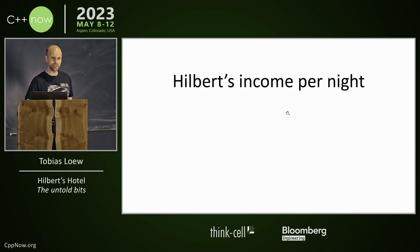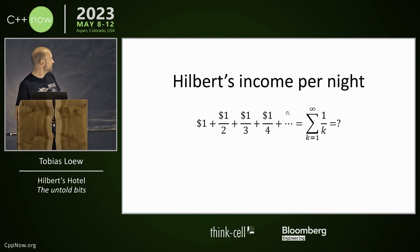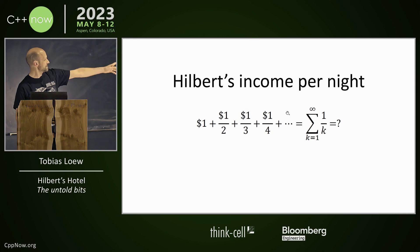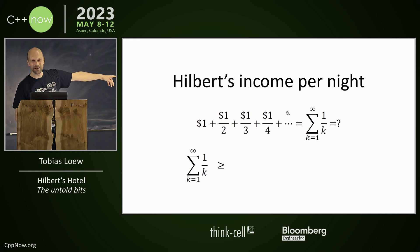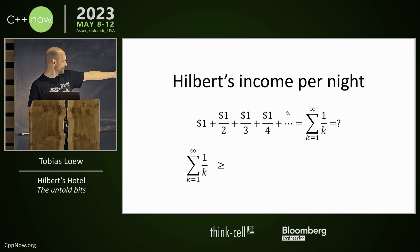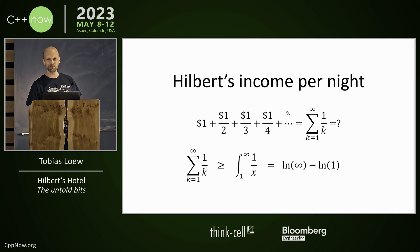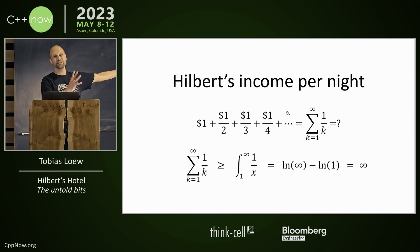Now let's look at Hilbert's income per night. The room rates are: one dollar, one dollar divided by two, one dollar divided by three, and so on. That gives you the harmonic series — the sum over one over k — minus one dollar. This is a strict upper bound to the integral of 1/x, which sums to the logarithm of infinity minus the logarithm of one, which is zero. So Hilbert earns an infinite amount of dollars each night.